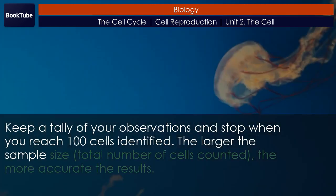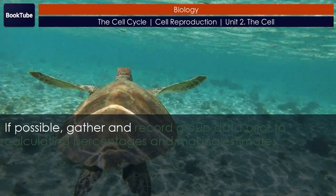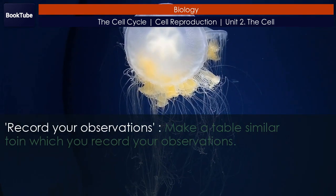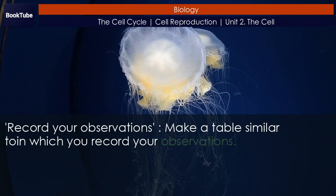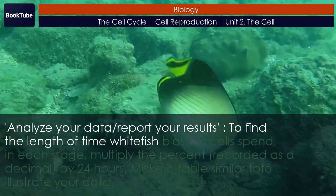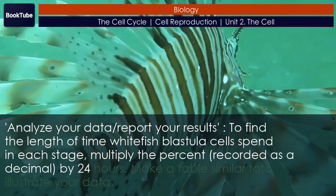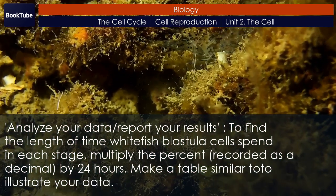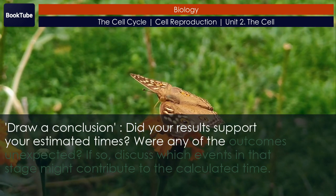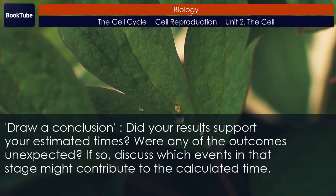Keep a tally of your observations and stop when you reach 100 cells identified. The larger the sample size — total number of cells counted — the more accurate the results. If possible, gather and record group data prior to calculating percentages and making estimates. Record your observations in a table. To find the length of time whitefish blastula cells spend in each stage, multiply the percent, recorded as a decimal, by 24 hours. Draw a conclusion: Did your results support your estimated times? Were any of the outcomes unexpected? If so, discuss which events in that stage might contribute to the calculated time.